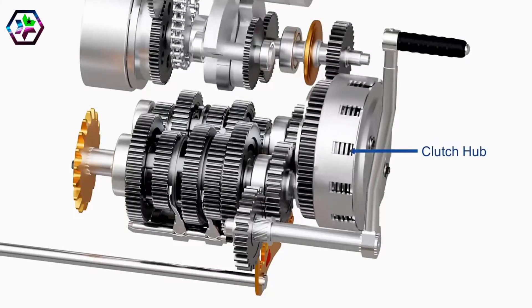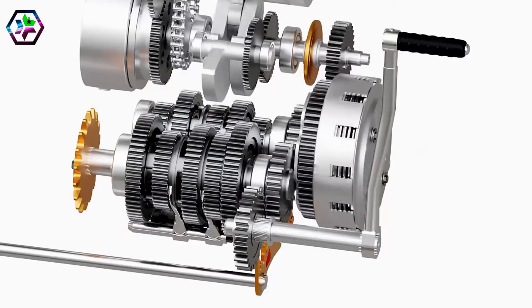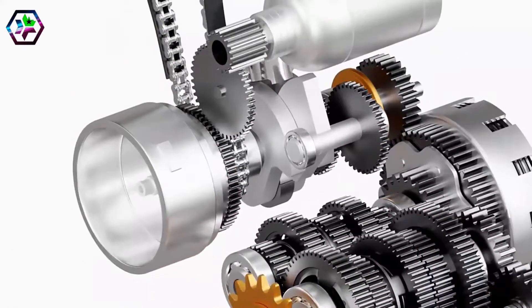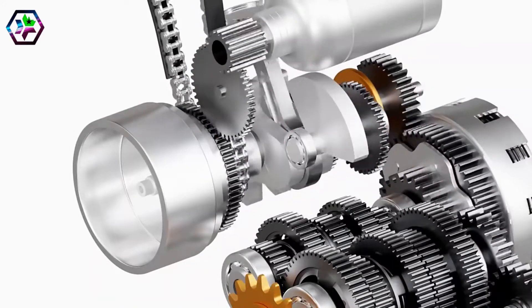The clutch hub transfers the power to the crankshaft and eventually to the engine. In a self-starter system, a battery-powered motor provides initial spin to the engine.